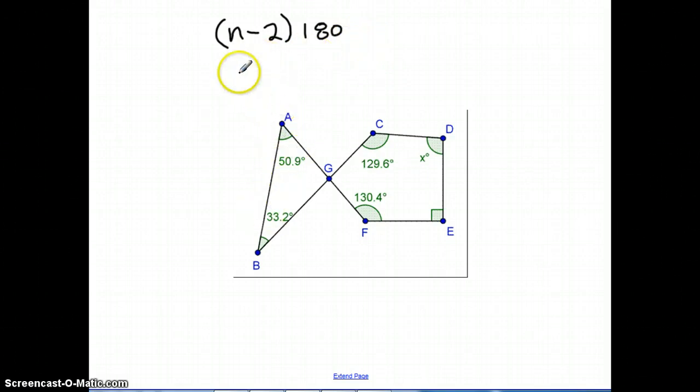So for example, we have a triangle here, so that means there's 3 sides minus 2 times 180. So I'd have 1 times 180, so we know that the triangle interior angles have a sum of 180 degrees.